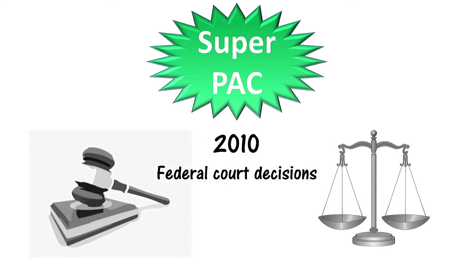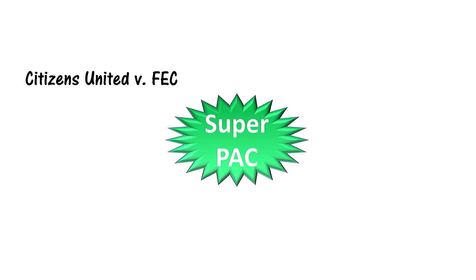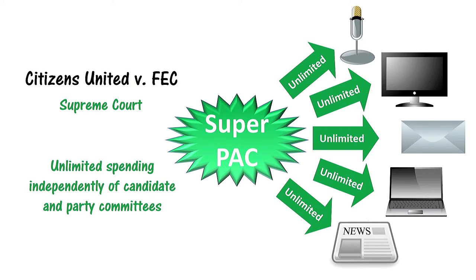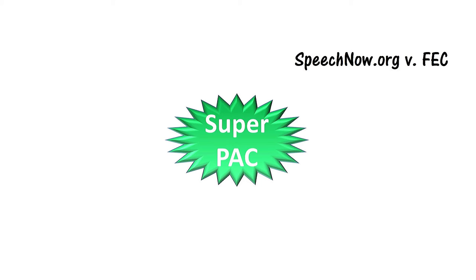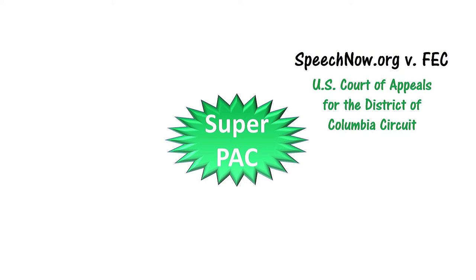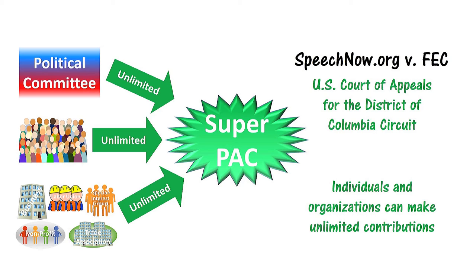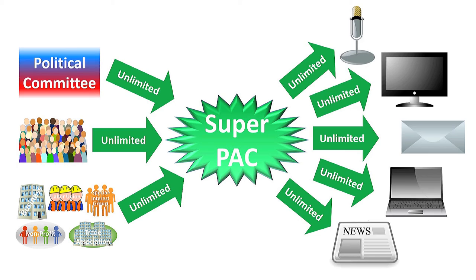Two 2010 federal court decisions facilitated the creation of super PACs by overturning previous campaign finance restrictions. In the Citizens United v. FEC decision, the Supreme Court decided that organizations can spend an unlimited amount on electioneering communications as long as they do so independently of candidate and party committees. And in the SpeechNow.org v. FEC decision, the U.S. Court of Appeals for the District of Columbia Circuit removed contribution limits for donations to committees and organizations that act independently of candidate and party committees. Together, these court cases have allowed super PACs to raise and spend unlimited amounts to influence elections.